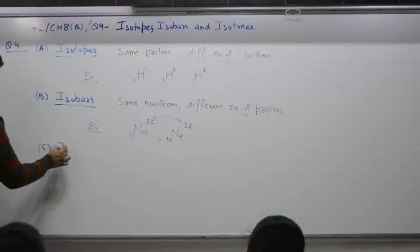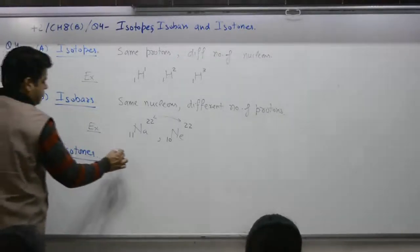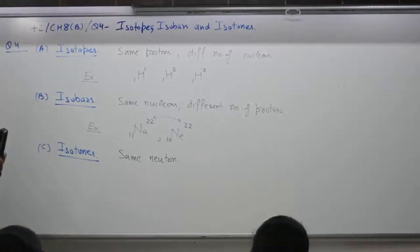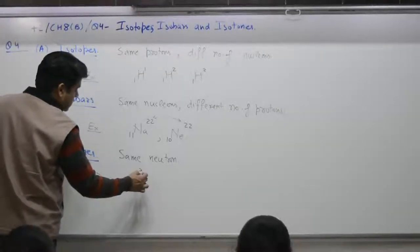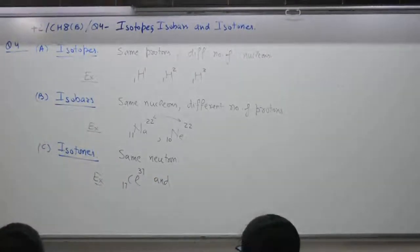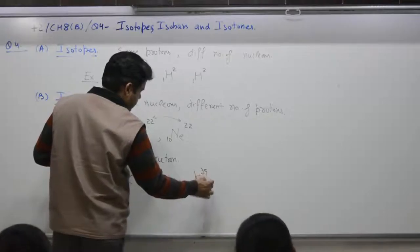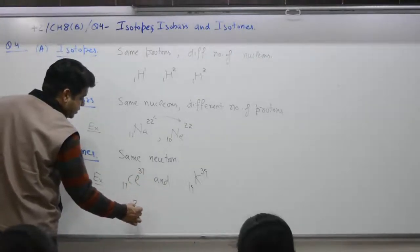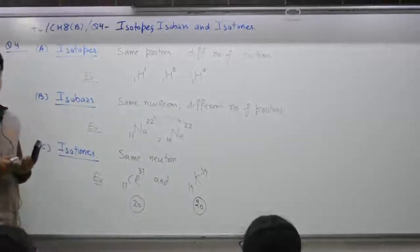Part three: Isotones, same neutrons. How you find neutron? Total number of nucleons minus number of protons. Example: first one is chlorine, 17, 37, and another element is potassium, 19, 39. 37 minus 17, total number of nucleons minus protons, this number of neutrons in this case is 20. 39 minus 19, total number comes out to 20. Number of neutrons is same.